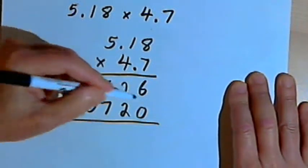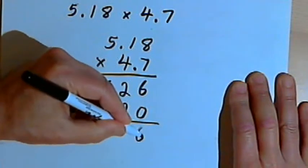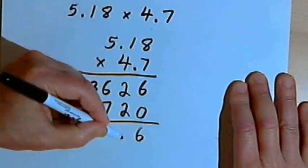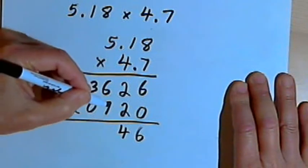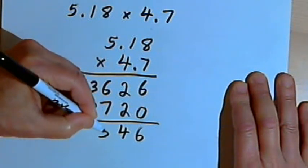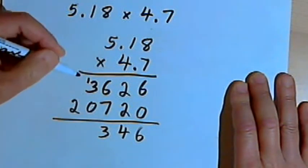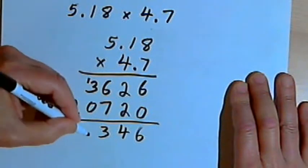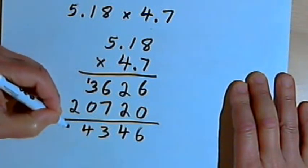Now I'm ready to add these numbers up. 6 plus 0 is 6. 2 plus 2 is 4. 6 plus 7 is 13, so that's a 3 and carrying a 1. 1 plus 3 is 4. And then I've just got a 2.